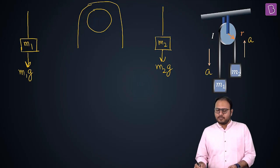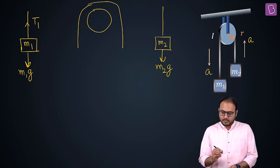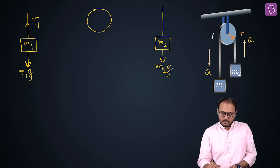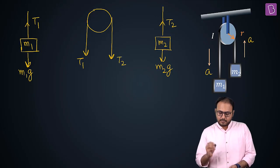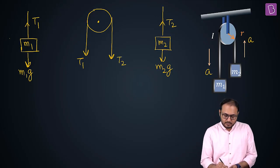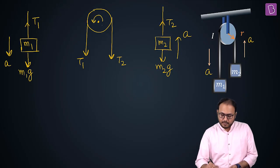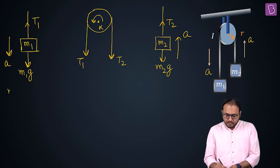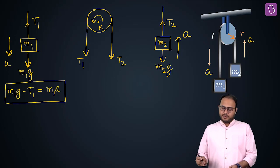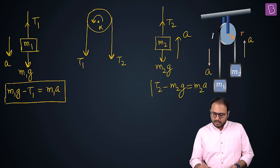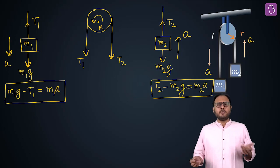You don't need to draw the complete free body diagram of the pulley — I'll tell you why. The good old equation: m1·g − T1 = m1·a. And T2 − m2·g = m2·a. These are simply F = ma applied to both blocks.